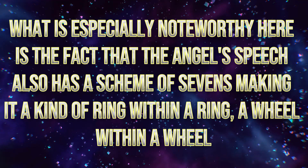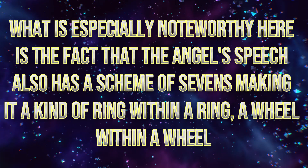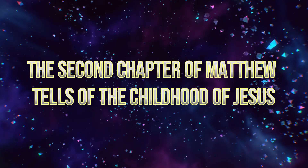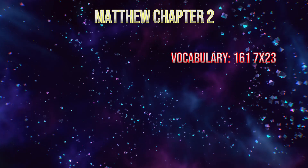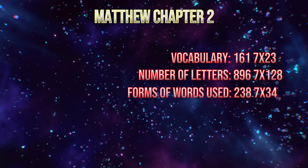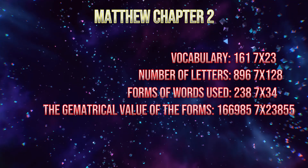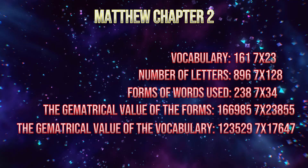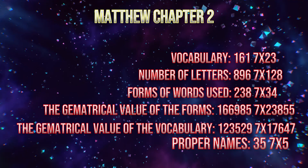What is especially noteworthy here is the fact that the angel's speech also has a scheme of sevens, making it a kind of ring within a ring — a wheel within a wheel. The second chapter of Matthew tells of the childhood of Jesus. The vocabulary used is 161. The number of letters is 896. The forms of words used is 238. The gematrical value of the forms is 166,985. The gematrical value of the vocabulary is 123,529. And the proper names used is 35. All multiples of 7.